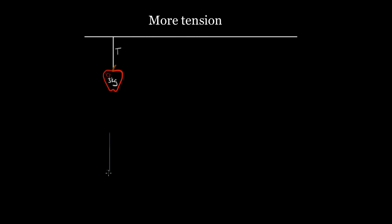We draw the forces. The force of gravity is exerted on this apple — it's always exerted on everything near the Earth — and it's mg. Then we've got a tension force, and tension does not push. You can't push with a rope; you can only pull with a rope. So this tension force points upward — I'll call it T. That's always the first step: draw your force diagram. Then you use Newton's second law for either the horizontal direction, the vertical direction, or both if you have to.